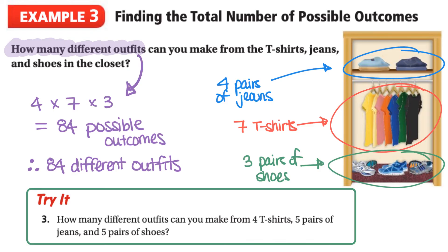Now let's take a look at our third try-it question. We can use the quick method to answer this question. How many different outfits can you make from four t-shirts, five pairs of jeans, and five pairs of shoes?